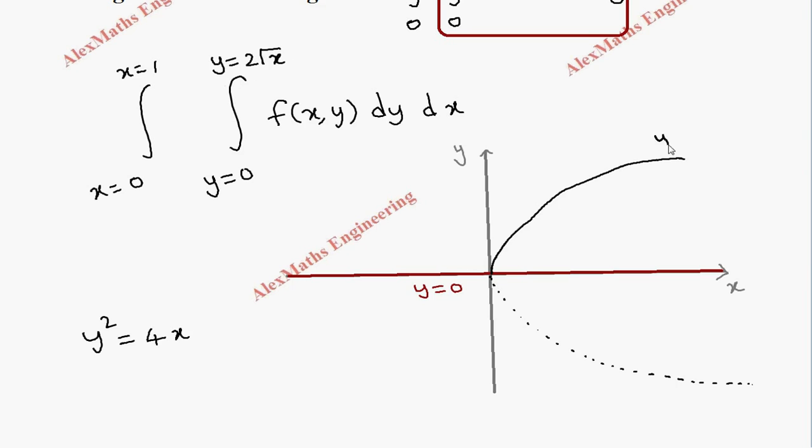And this is y equal to 2 root x. The limit of x is 0 to 1. So 0 is nothing but this line, x equal to 0, and 1 is nothing but we have a line here. You can also extend this, and this is x equal to 1. So the region which we consider is this.